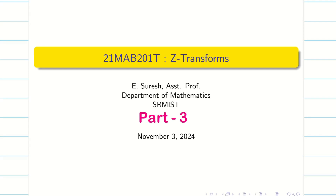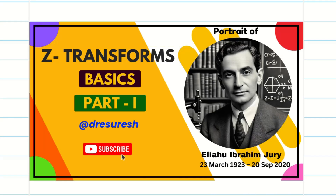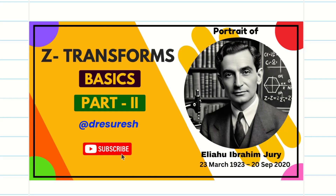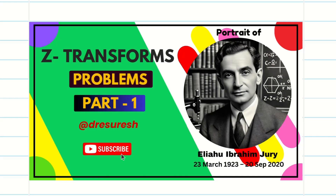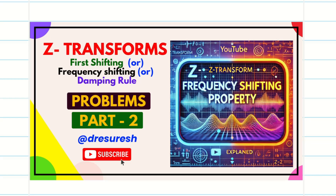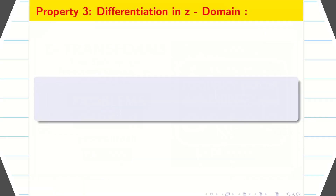Welcome to the problem solving session on Z-transform part 3. In the first video, we saw the basic formula on Z-transform and then a few properties. In the next video, we started to solve simple problems on Z-transform. In video number 4, we started solving problems based on the first or frequency shifting property. Those who haven't watched the videos, go to the playlist, watch all four videos and come back here. In today's session, we are going to see the next property.